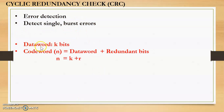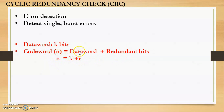The message is divided into data words, and each data word is of k bits. To each data word, redundant bits are added at the end, resulting in a codeword. So the codeword equals the data word plus the redundant bits: n = k + r, where n is the number of bits in the codeword, k is the number of bits in the data word, and r is the redundant bits. This codeword is then sent over the transmission medium.